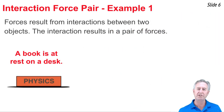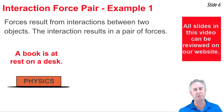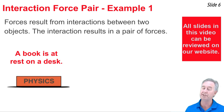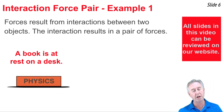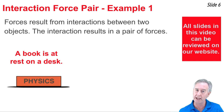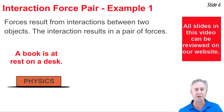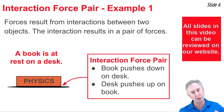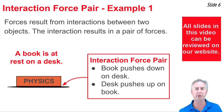Newton's Third Law suggests that forces result from interactions between objects. Consider a book at rest on a table. The book touches the table, and since you can't touch without being touched, the table touches the book. That interaction results in a pair of forces. Here's how we would describe that interaction force pair: the book pushes down on the table, and the table pushes up on the book.